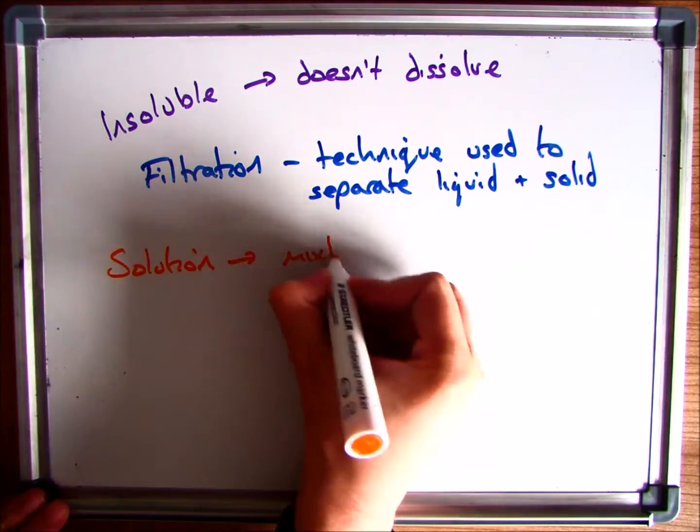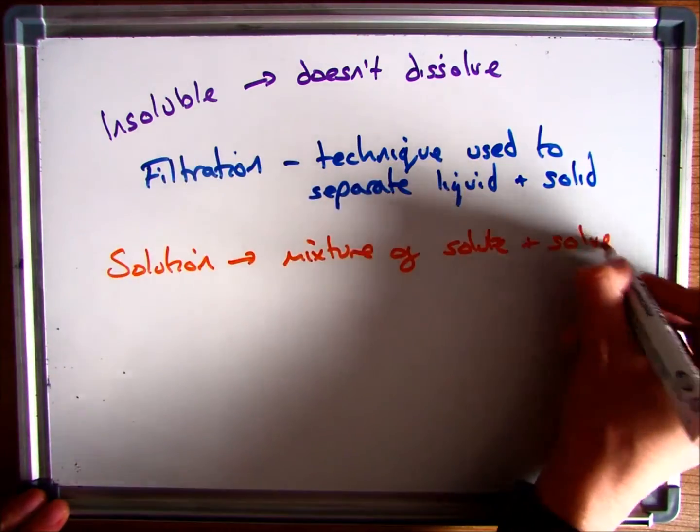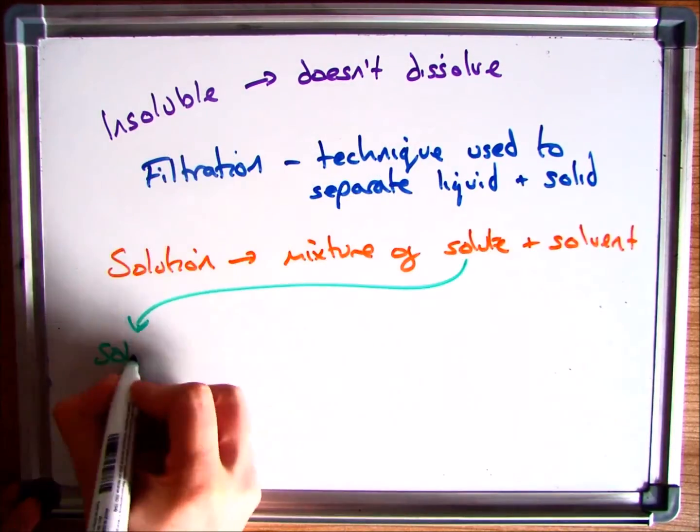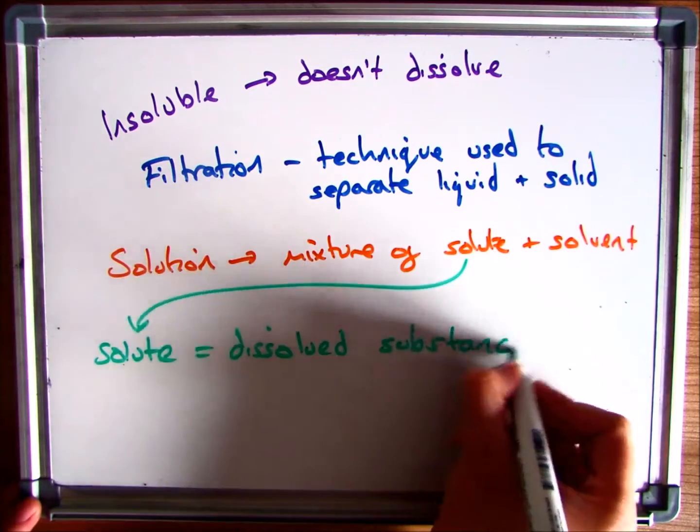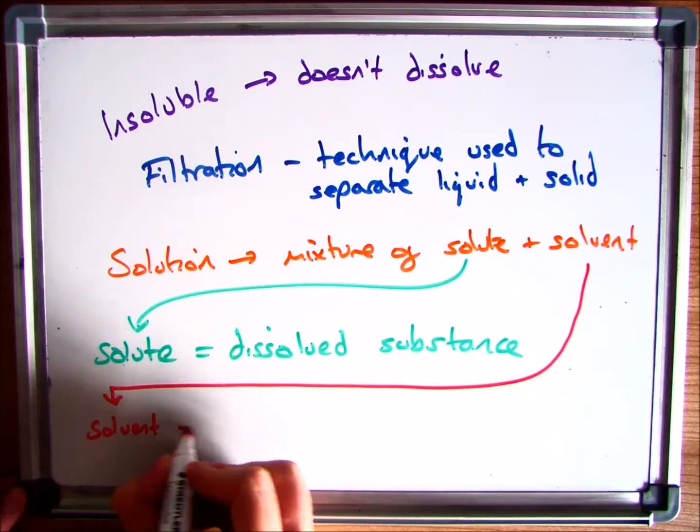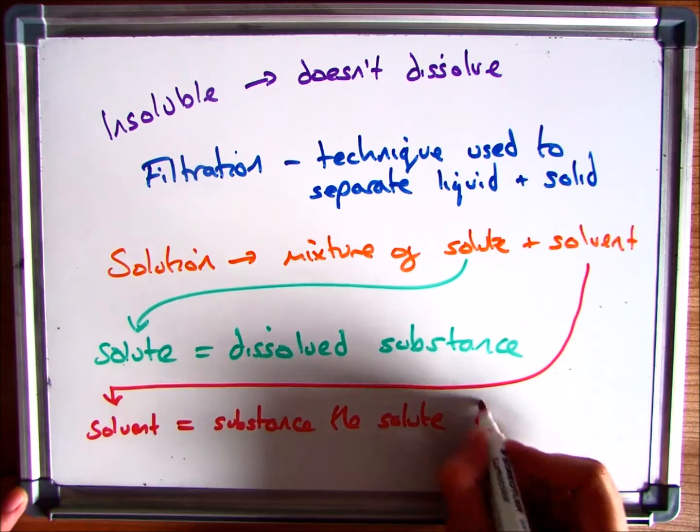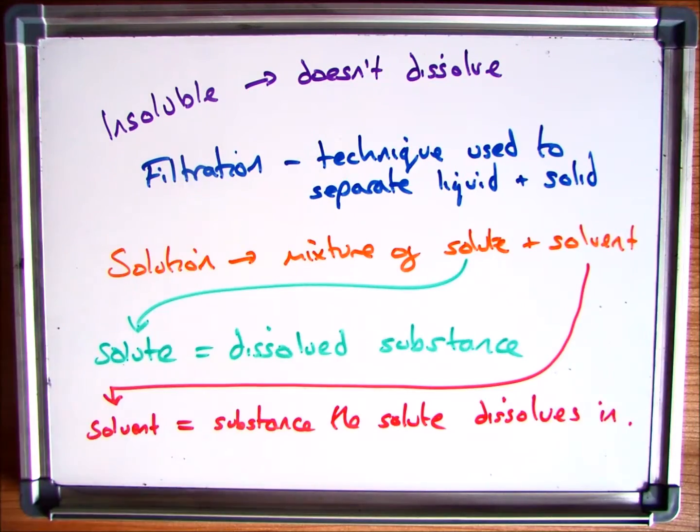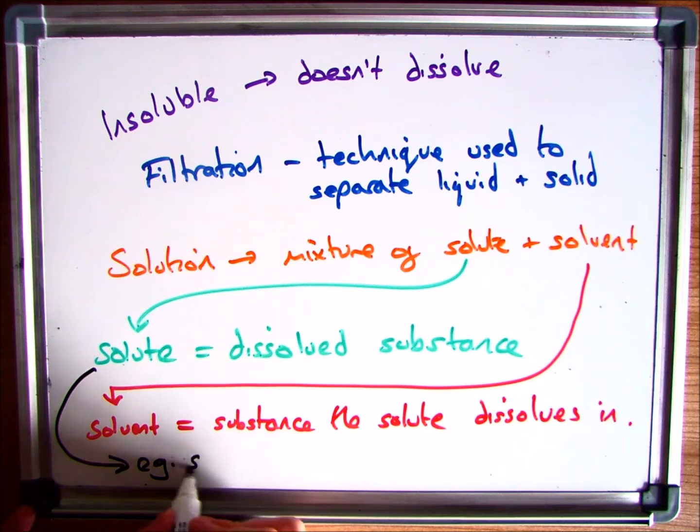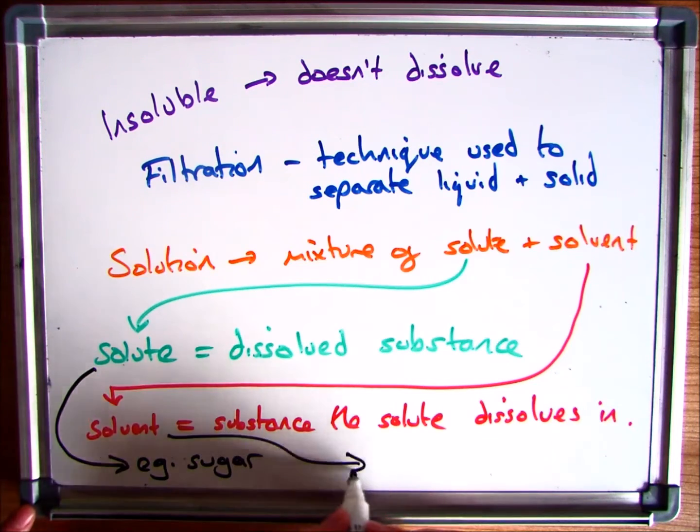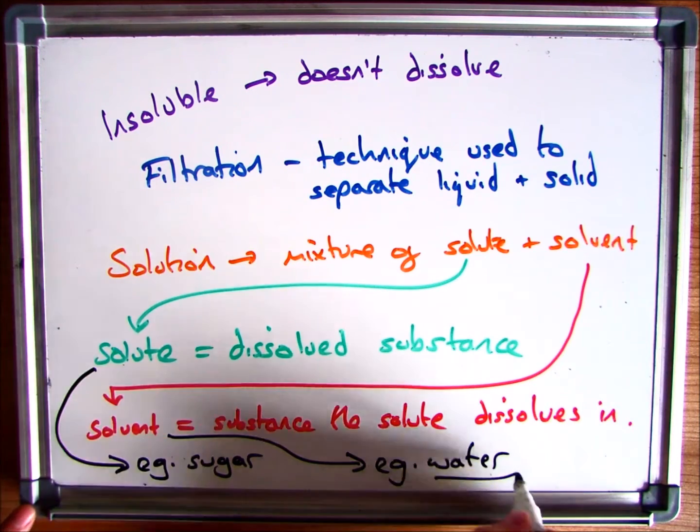A solution is a mixture of a solute and a solvent. Breaking that definition down, you have a solute which is a solid that's dissolved and you have a solvent which is a liquid that that solute dissolves in. For example, you could have sugar which dissolves in water. Sugar is your solute and your solvent is water.